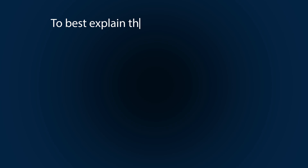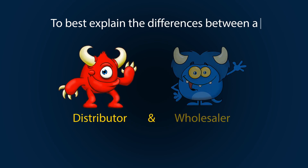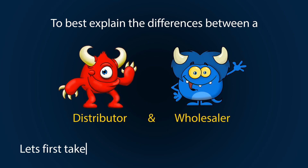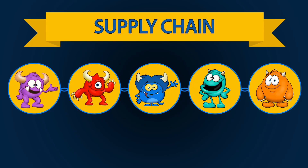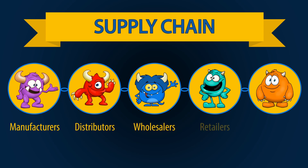To best explain the differences between a distributor and a wholesaler, let's first take a glance at the supply chain as a whole. The supply chain is the system used to get products from manufacturer to the customer. The supply chain includes manufacturers, distributors, wholesalers, retailers, and customers.